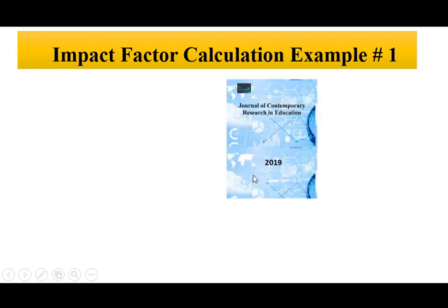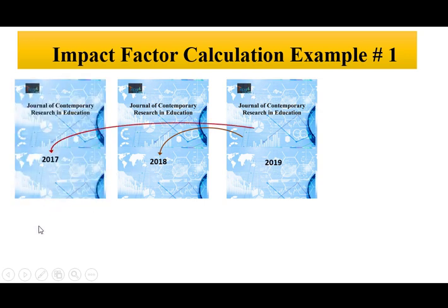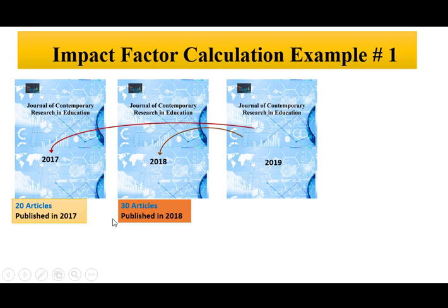Here is one example of how impact factor is calculated. If we want to calculate the impact factor of the Journal of Contemporary Research in Education for 2019, we need to look at the number of articles published in 2017 and 2018. Let's say in 2017, 20 articles were published, and in 2018, 30 articles were published by the same journal.